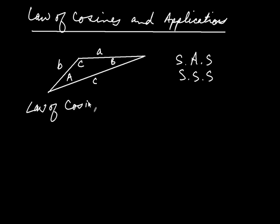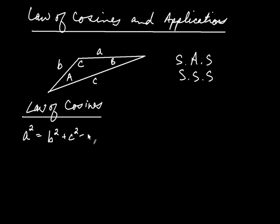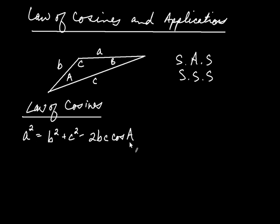Law of cosines states that a squared is equal to b squared plus c squared minus two b times c times cosine of angle A. The lowercase letters are the lengths of the sides — a, b, and c — and the capital A is the angle opposite side a. This is one form of the law of cosines. Sometimes you are looking for a side, and other times you are looking for an angle.